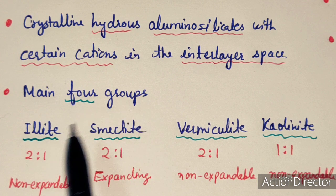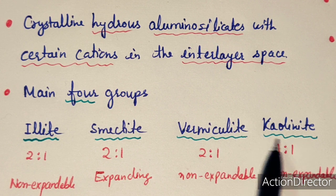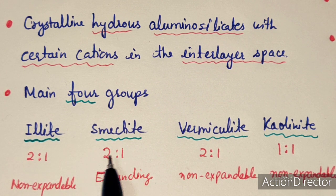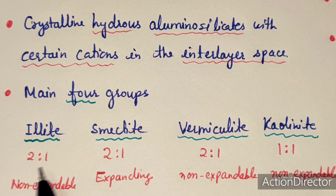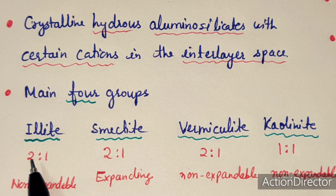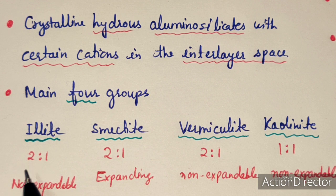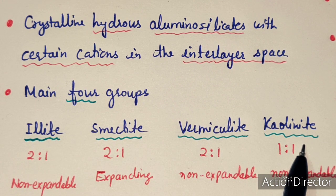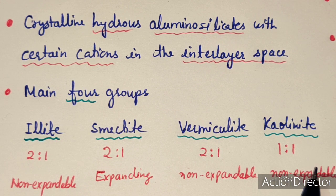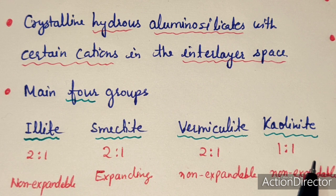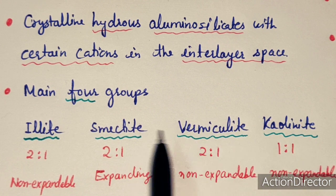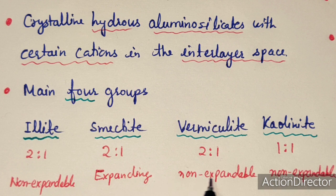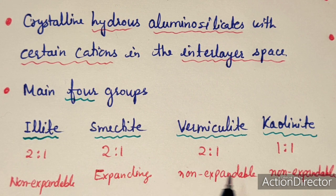Clays can be divided into four main groups: illite, smectite, vermiculite, and kaolinite. Among these, smectite, vermiculite, and illite are 2:1 type clays where the repeating unit is two tetrahedral layers and one octahedral layer (T-O-T). Kaolinite is a 1:1 type clay with alternating tetrahedral and octahedral layers (T-O-T-O).